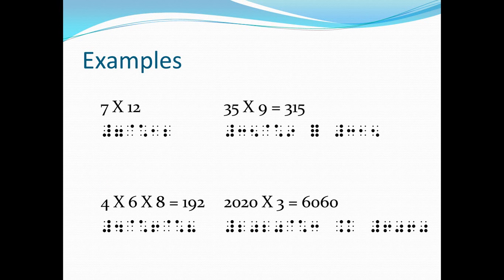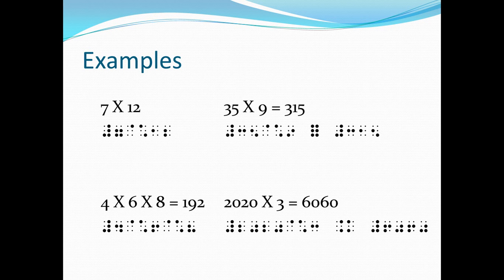How do we write the expression 7 times 12 in the Nemeth Braille Code? We need to use the numeric indicator first, then the digit 7, then the multiplication sign. Take note: there's no space after 7 or before the multiplication cross. The multiplication cross in Nemeth is a two-cell character — dot 4 on the first cell and dots 1 and 6 on the second cell — with no space after the sign. Then we write the number 12 without a numeric indicator, so we write digits 1 and 2.